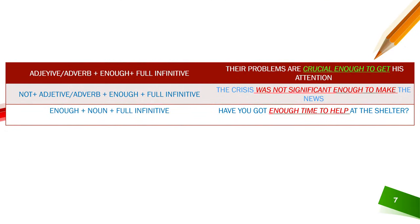Let's check some examples and the structure of how we can use enough. The first structure is: adjective or adverb plus enough plus full infinitive. The example is: their problems are crucial enough to get his attention. The second structure is: not plus adjective or adverb plus enough plus full infinitive. And finally, enough plus noun plus full infinitive. The example is: have you got enough time to help at this shelter?